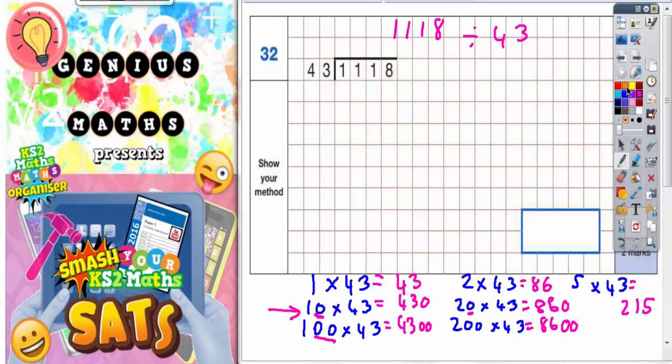Now when you are doing the chunking method for division, what you're actually doing is repeatedly subtracting chunks until there is nothing left. So we need to subtract some chunks of 43 until there is nothing left from 1118. You would find the biggest chunk that you can subtract. Well we can't subtract 4300 or 8600 because there isn't that much there to begin with. So the biggest number I can subtract so far is this 860.